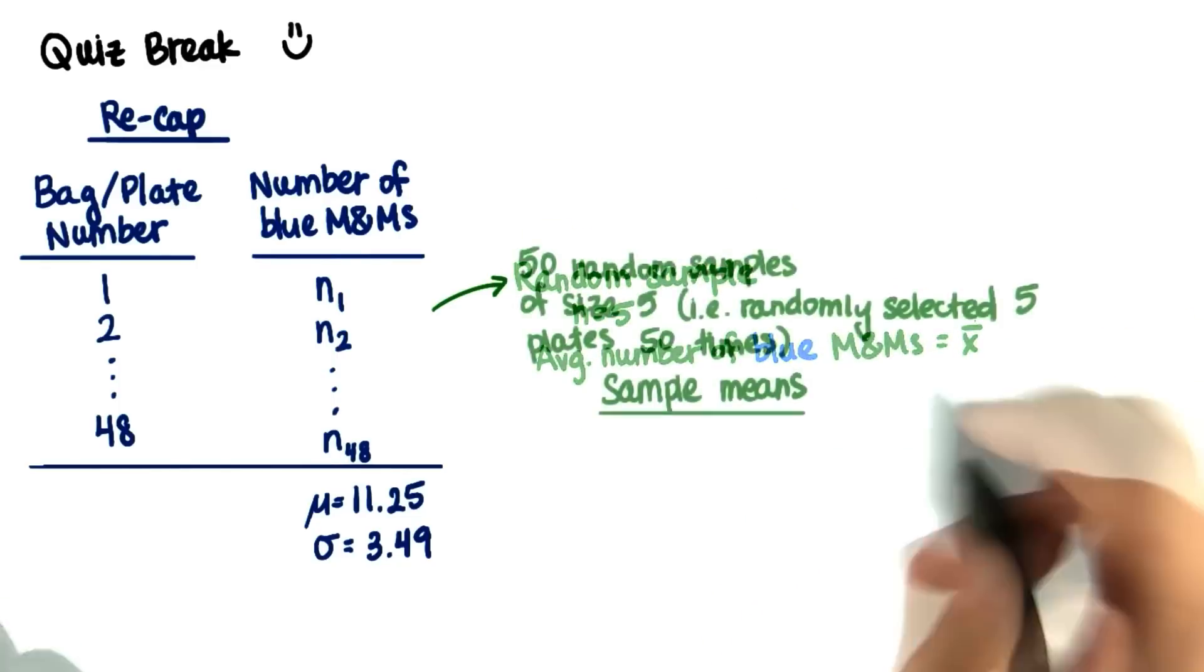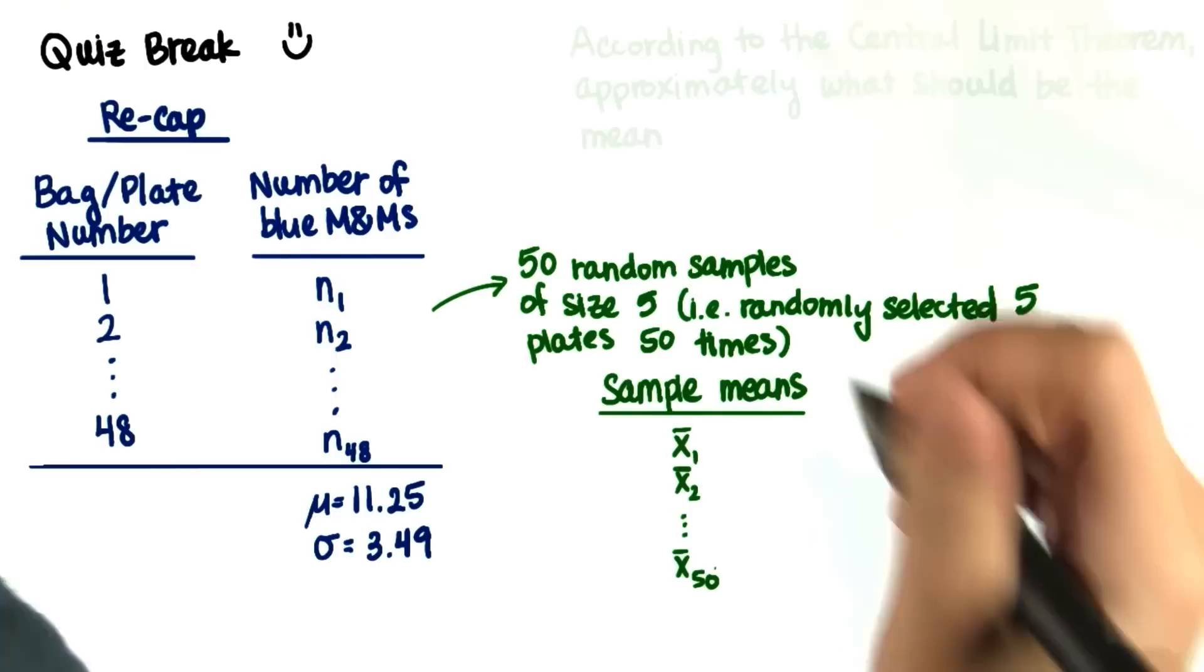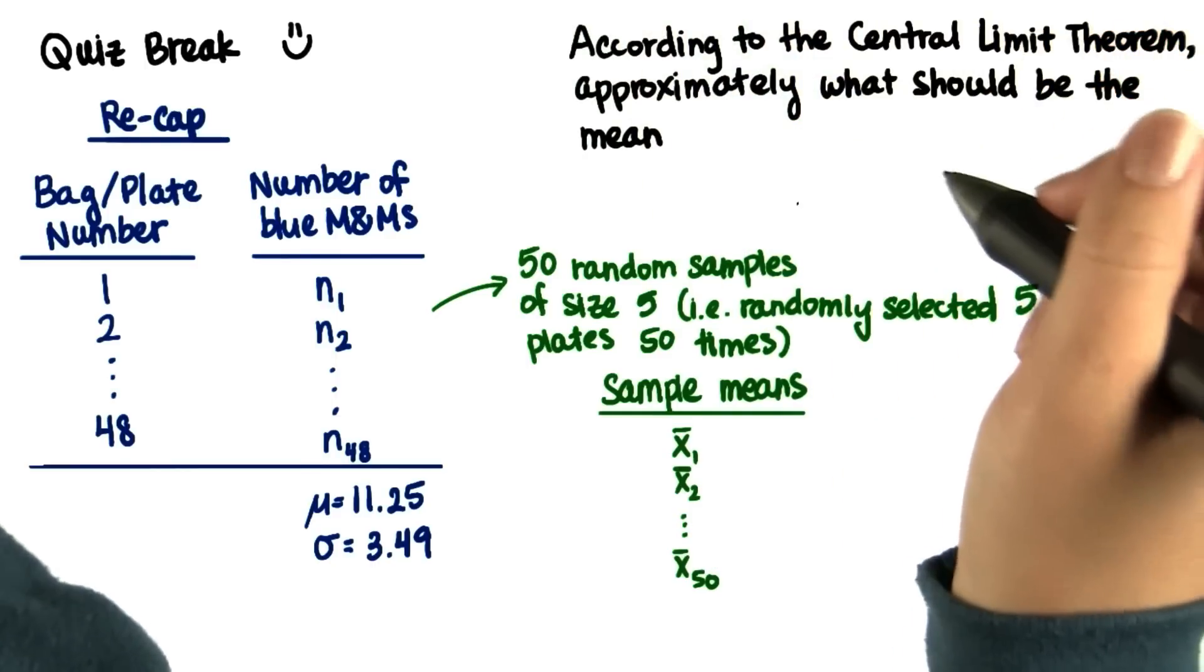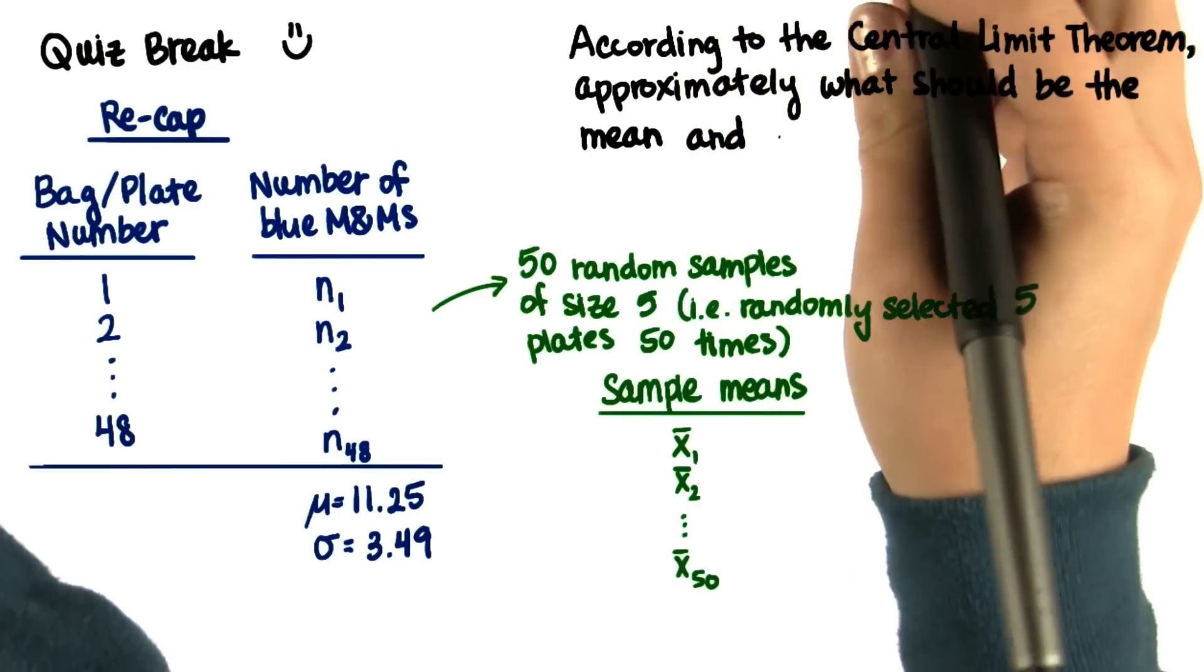Can you believe it? So then they got 50 sample means. Now let's take a quick quiz. According to the Central Limit Theorem, approximately what should be the mean and standard deviation of this distribution of sample means?